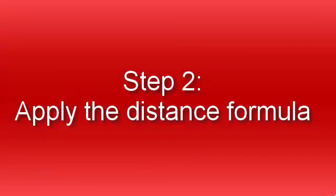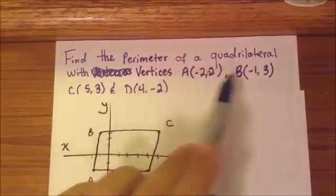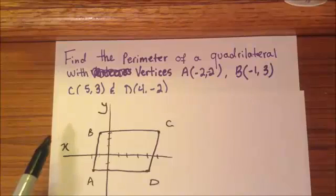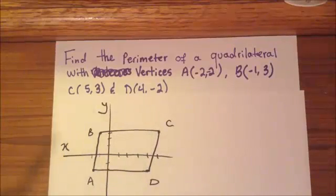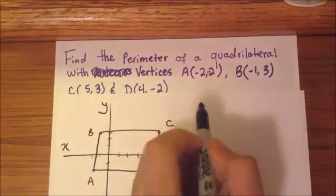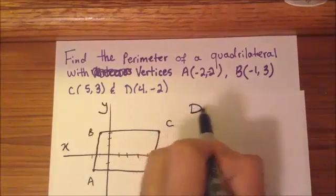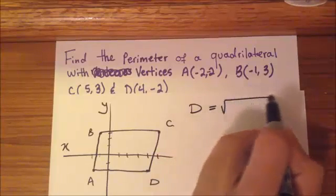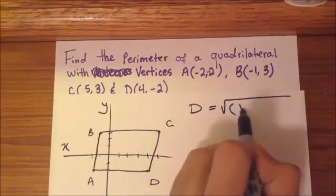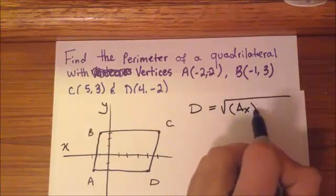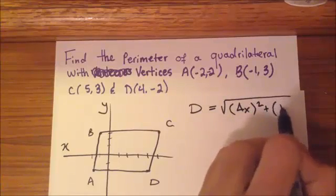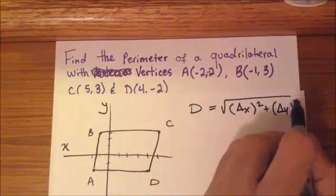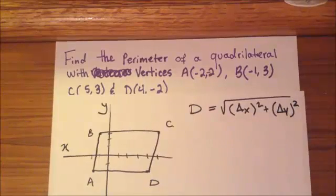One of the things that we can do is use the distance formula, since we have all the vertices, and then we can just pick our points. So we're going to use the distance formula. Let me write the formula here. d equals the square root of delta x squared plus delta y squared.